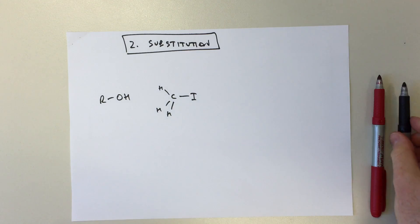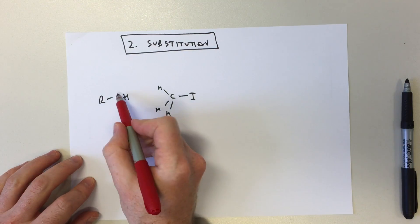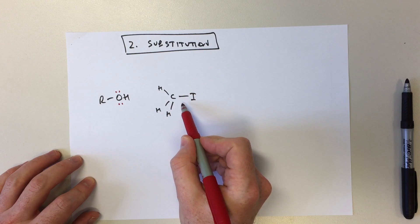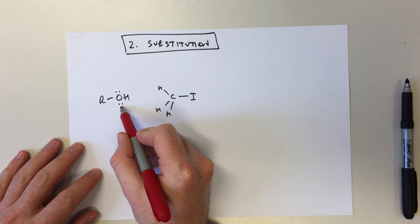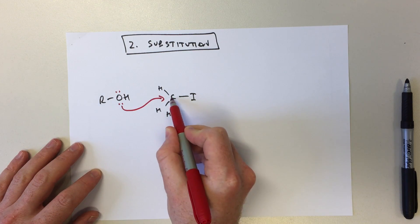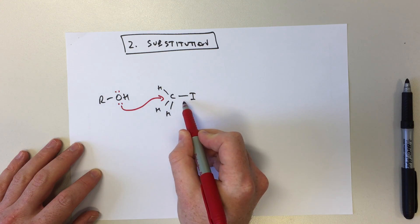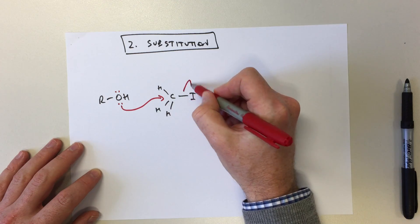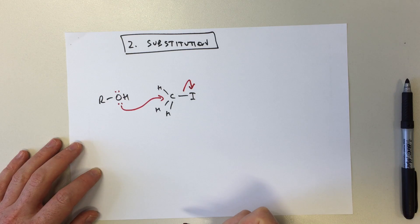In this reaction the alcohol is our nucleophile and the carbon in iodomethane is the electrophile. So the alcohol will attack here and this carbon's already got four bonds, can't have more than four so we have to break a bond. So we're going to break that carbon-iodine bond like that.